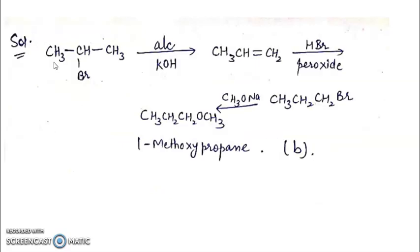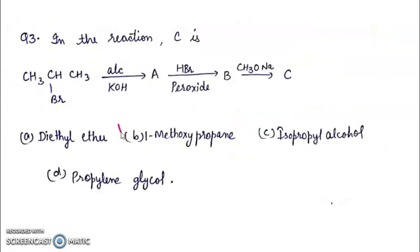Coming to the solution, when 2-bromopropane reacts with alcoholic KOH, elimination will occur. Beta elimination will happen, forming propene. Then HBr with peroxide will give 1-bromopropane. After that CH3-O-Na will cause substitution. Br will be removed and O-CH3 will be joined. Right answer will be 1-methoxypropane. The correct answer is B.